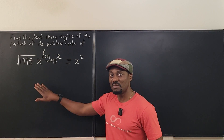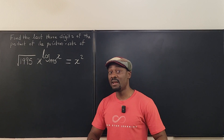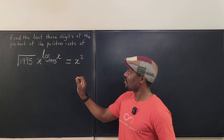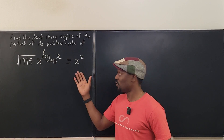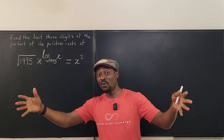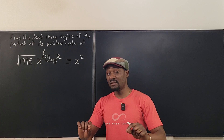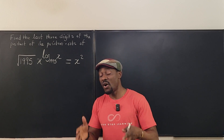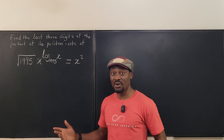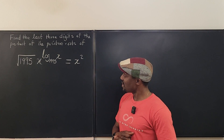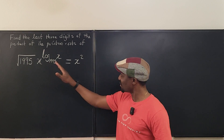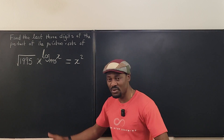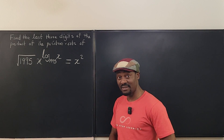This is not supposed to be a tough question, but it's supposed to separate the men from the boys. What you're supposed to do is find the last three digits of the product of the positive roots of this equation. So when you solve the equation, you take all the positive answers, multiply them together, and determine the last three digits. The hardest thing about this problem is knowing how to start.